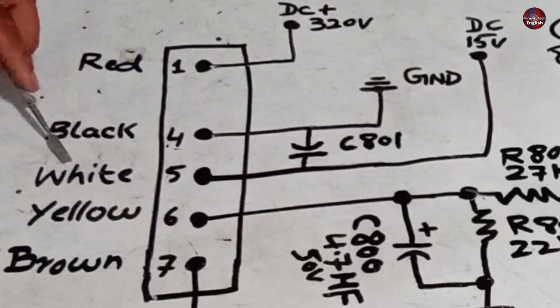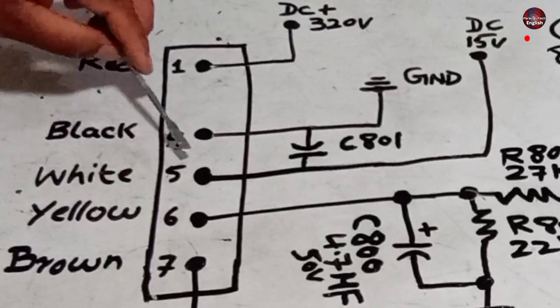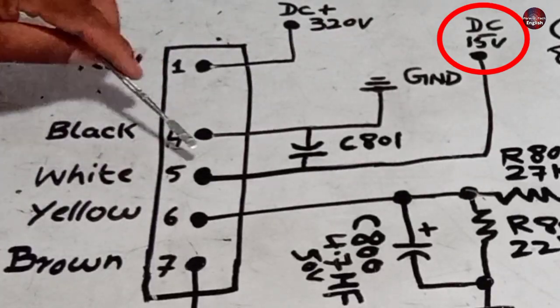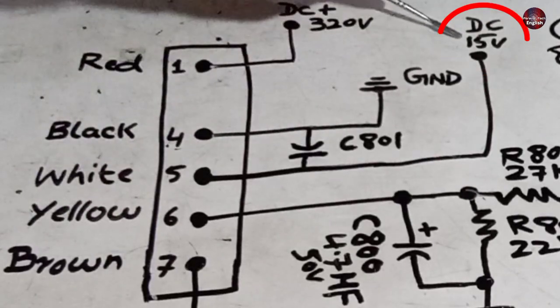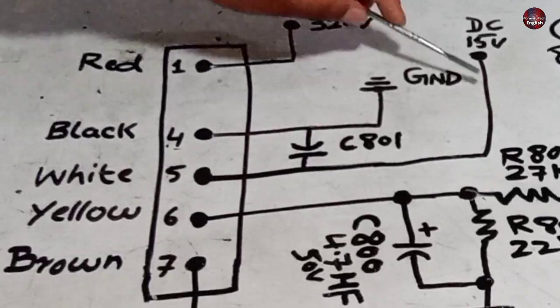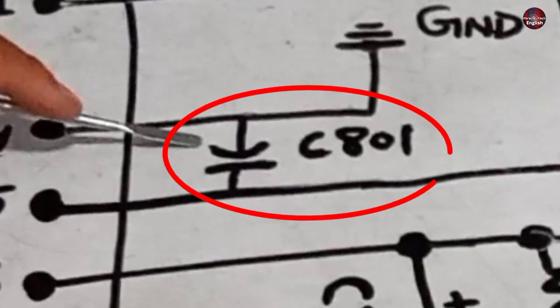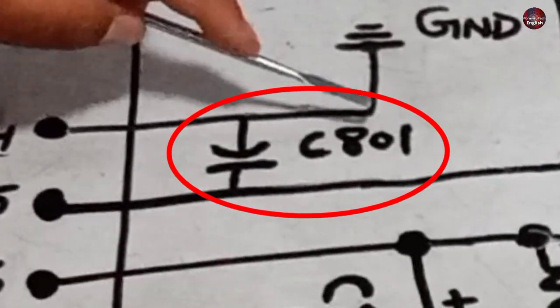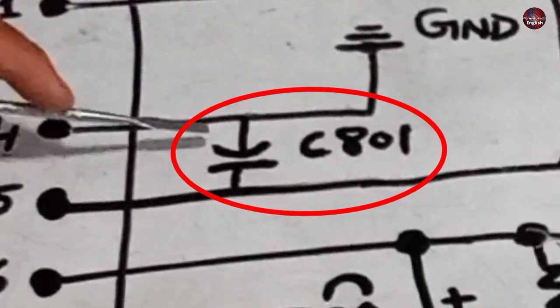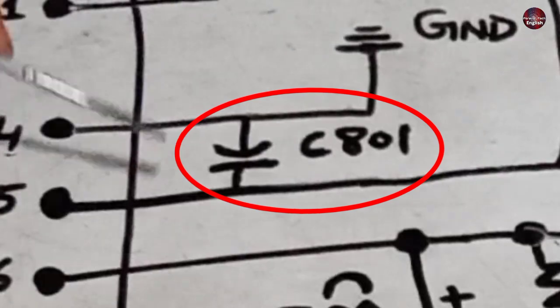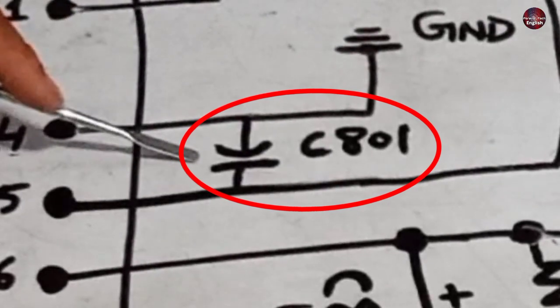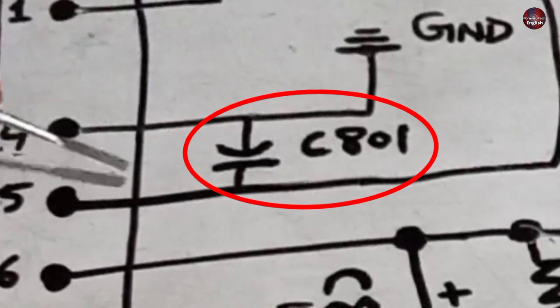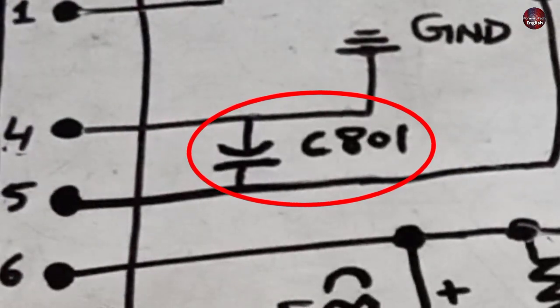The next is the white and the 5th number pin. It should contain 15 DC volts, and the fan motor will work, otherwise, it will not work properly. Except this, a capacitor number C801 is connected between 4 and 5 pins to control the electric spikes. And if this capacitor is short-circuited for some reason, we will not get filtered 15 DC volts, and the fan motor will not work.